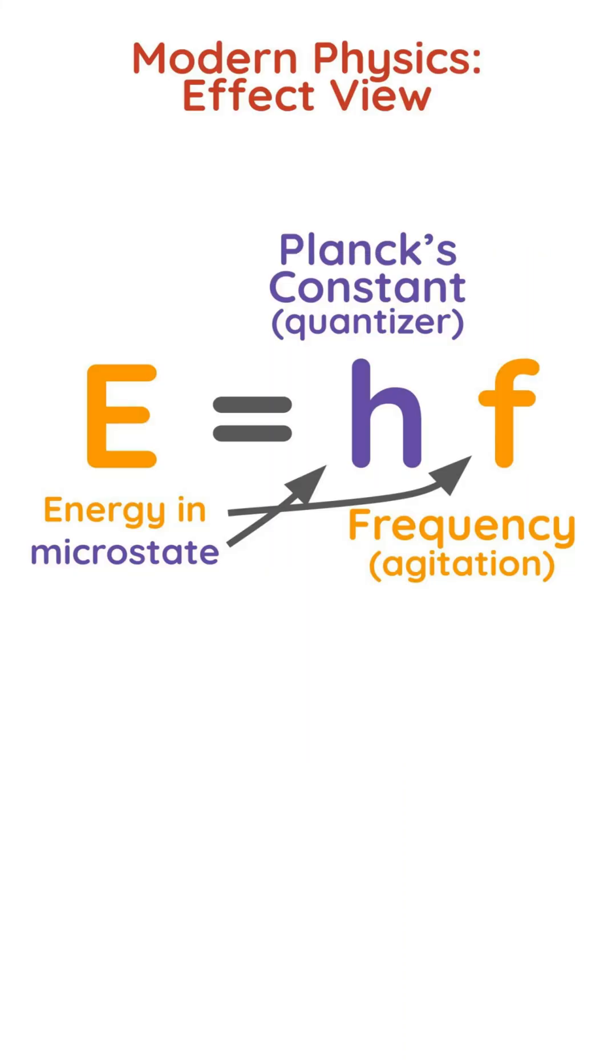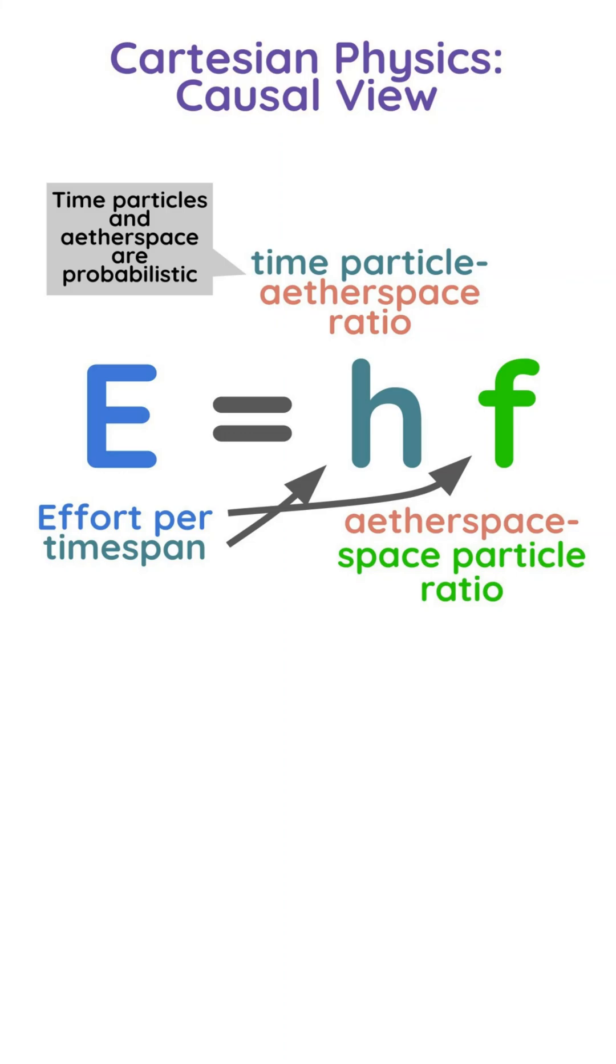Planck solved this by introducing quanta as Planck's constant, which in Cartesian physics is the ratio of time particles to etherspace particles.